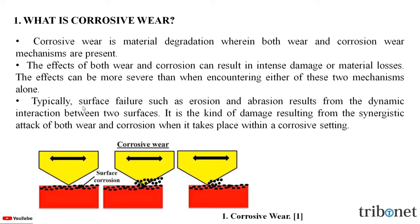Typically, surface failure such as erosion and abrasion results from the dynamic interaction between two surfaces. It is the kind of damage resulting from the synergistic attack of both wear and corrosion when it takes place within the corrosive setting.